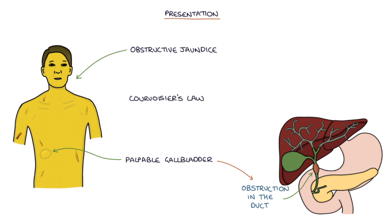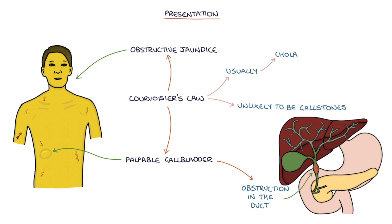Courvoisier's law states that if there's a palpable gallbladder and the patient has jaundice, the diagnosis is unlikely to be gallstones. The cause is usually cholangiocarcinoma or pancreatic cancer.